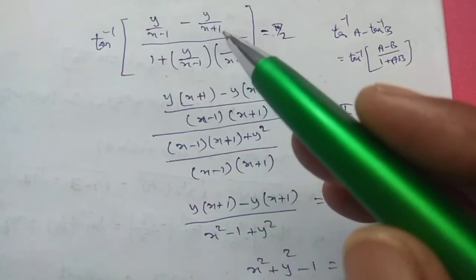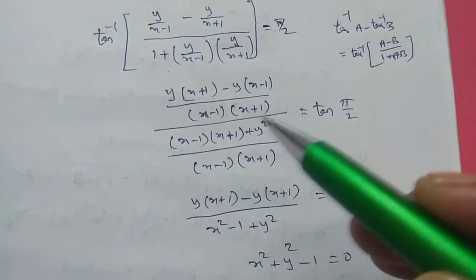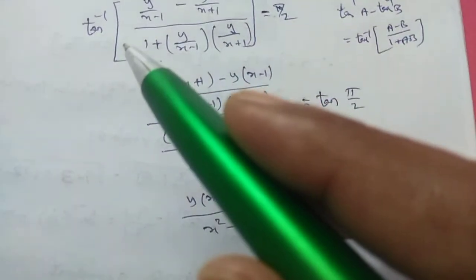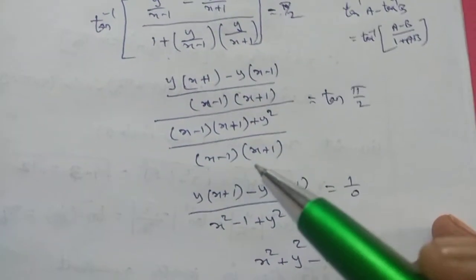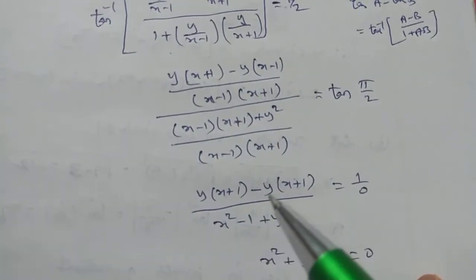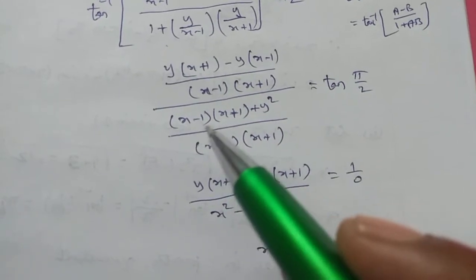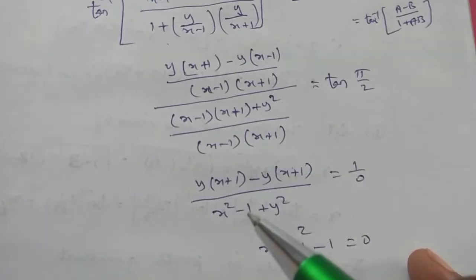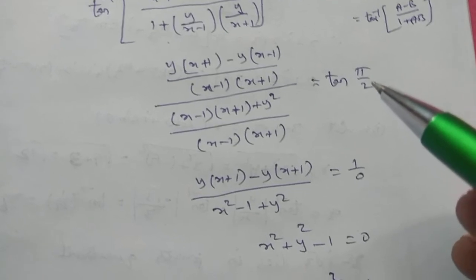After cross multiplication, the numerator is: y(x plus 1) minus y(x minus 1), and the denominator is: (x minus 1)(x plus 1) plus y squared. Using the identity (a plus b)(a minus b) equals a squared minus b squared, the denominator becomes x squared minus 1 plus y squared. So we get: [y(x plus 1) minus y(x minus 1)] divided by [x squared minus 1 plus y squared] equals tan 90, which is undefined.